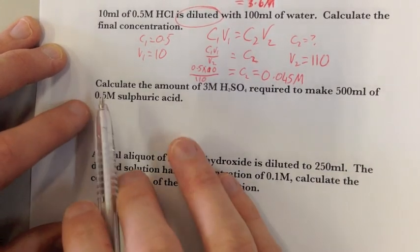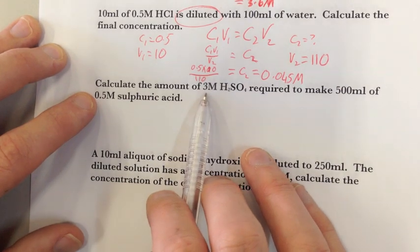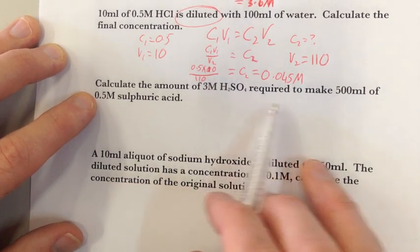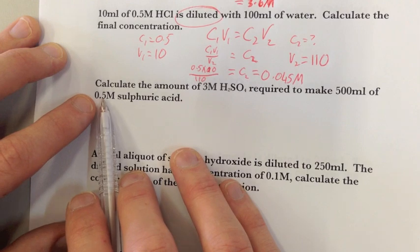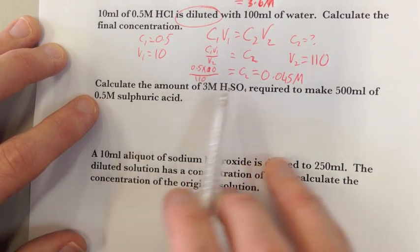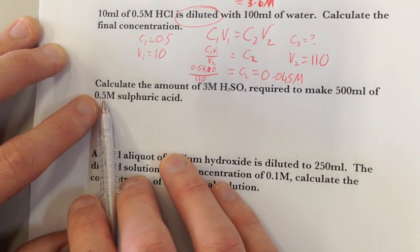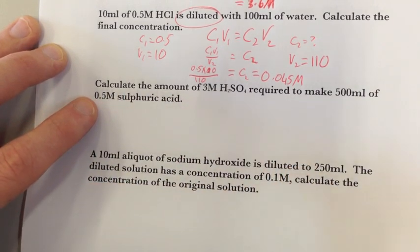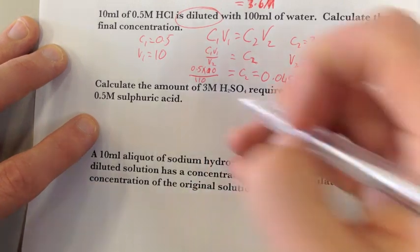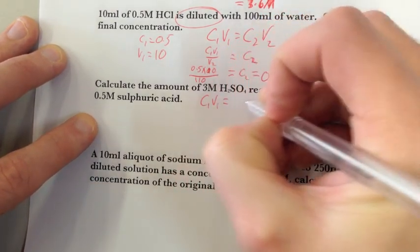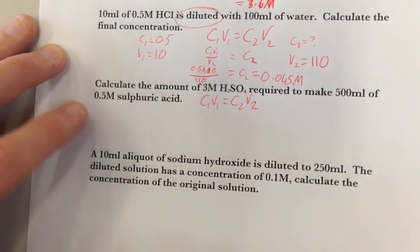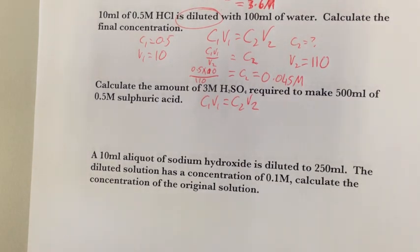Question 2. Calculate the amount of 3 molar sulfuric acid required to make 500 mils of 0.5 molar sulfuric acid. So we've got an initial concentration, we've got a final volume and concentration, and obviously it's asking us to make up a solution. So chances are it's going to be a dilution question. So C1V1 equals C2V2. Again, I start off by writing out my formula. In every single calculation question, I write out my formula.